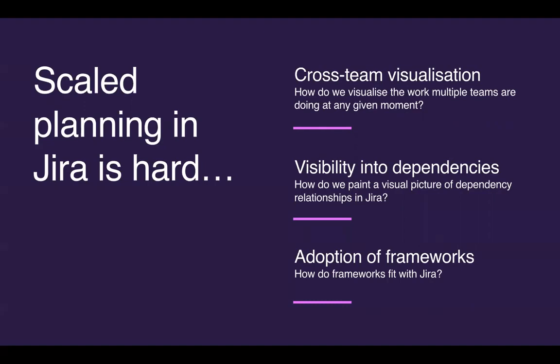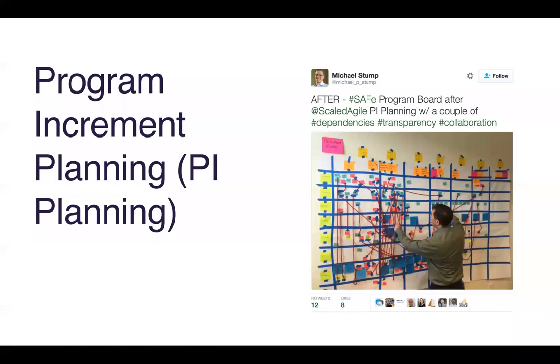The third thing we heard time and time again was that companies were pulling on frameworks to help them scale the success they had with agile at the team level across the entire organization. But the biggest challenge around framework adoption was that they didn't know how those frameworks would work within the confines of JIRA. Based on the title of this webinar, we're going to focus specifically on the SAFe framework — the Scaled Agile Framework.